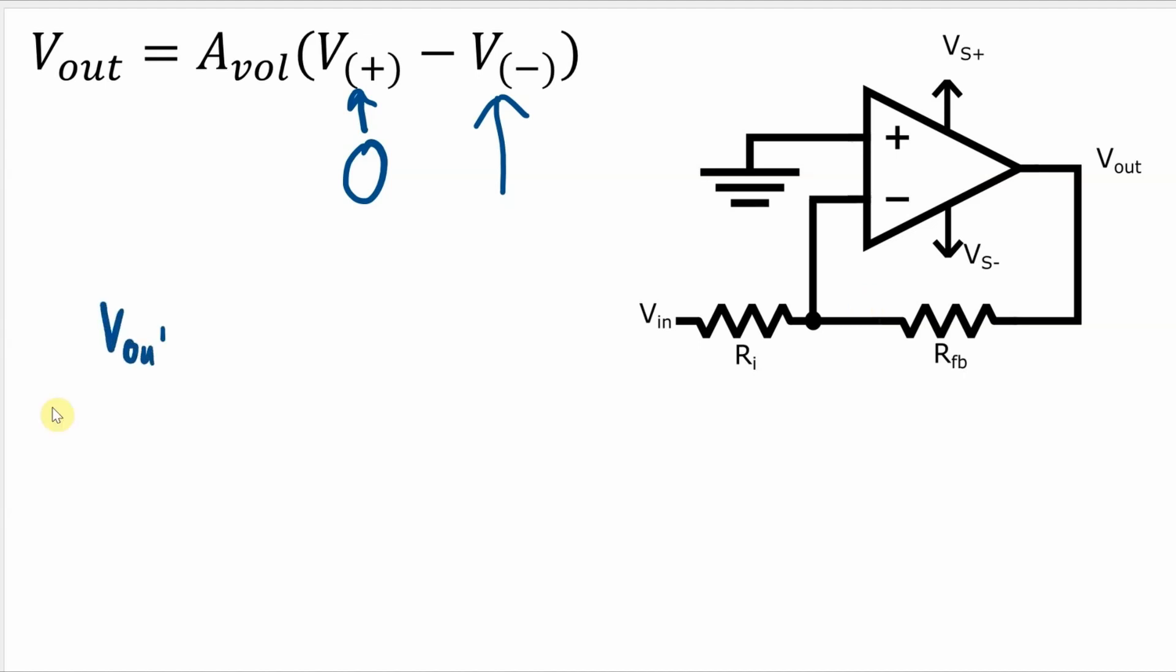But we only know that across those two resistances it's VOUT minus VIN. So that voltage VOUT minus VIN which is the voltage across the two resistors times RI over RI plus RFB that will give me the voltage across RI. But I need to know the voltage at this point with respect to ground so I need to add in the VIN.